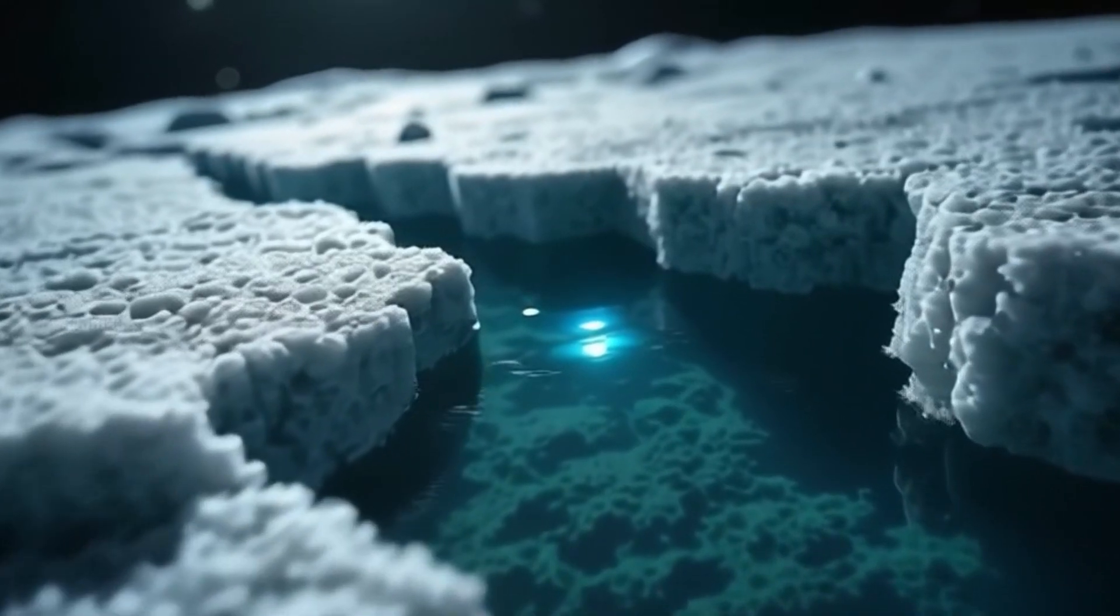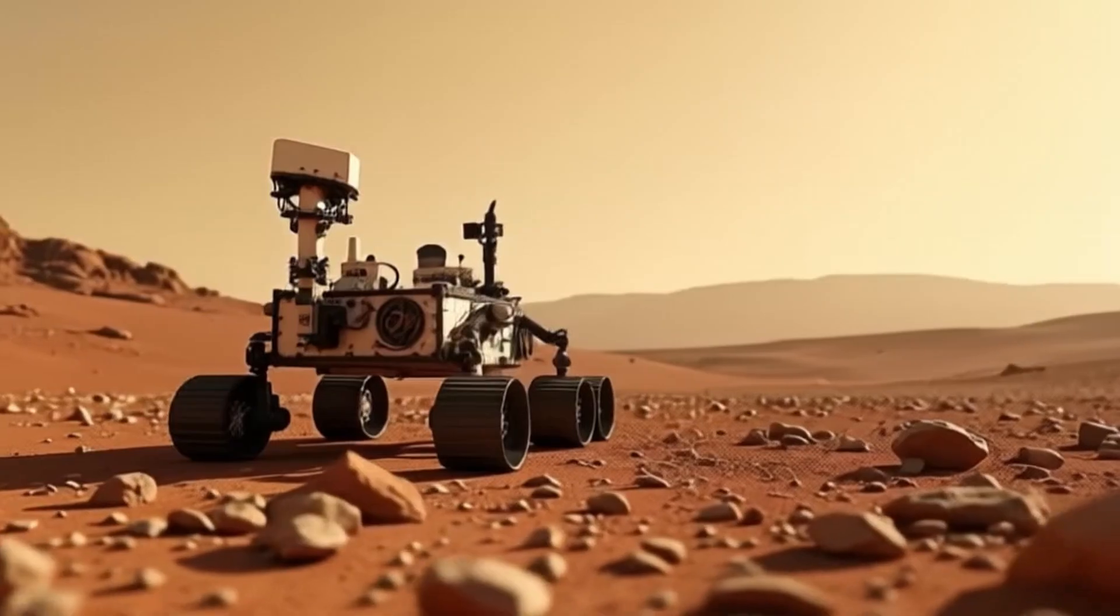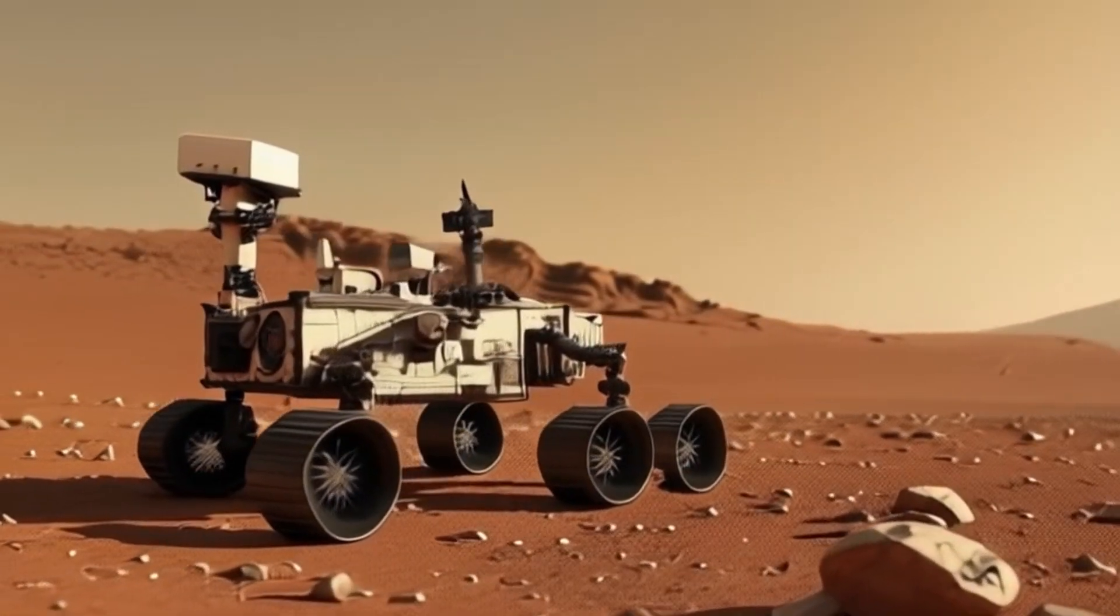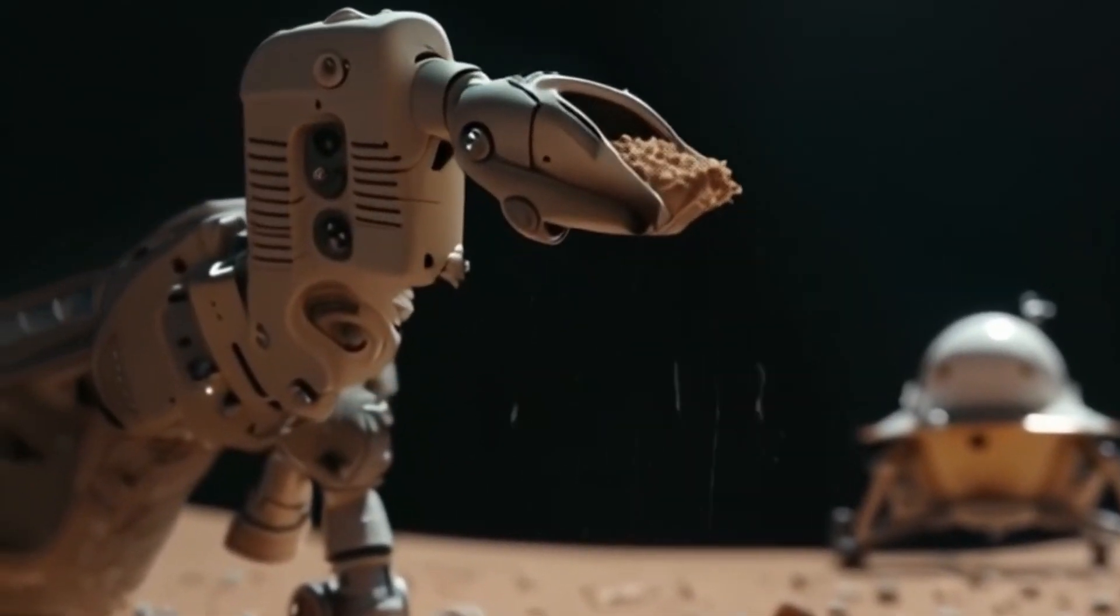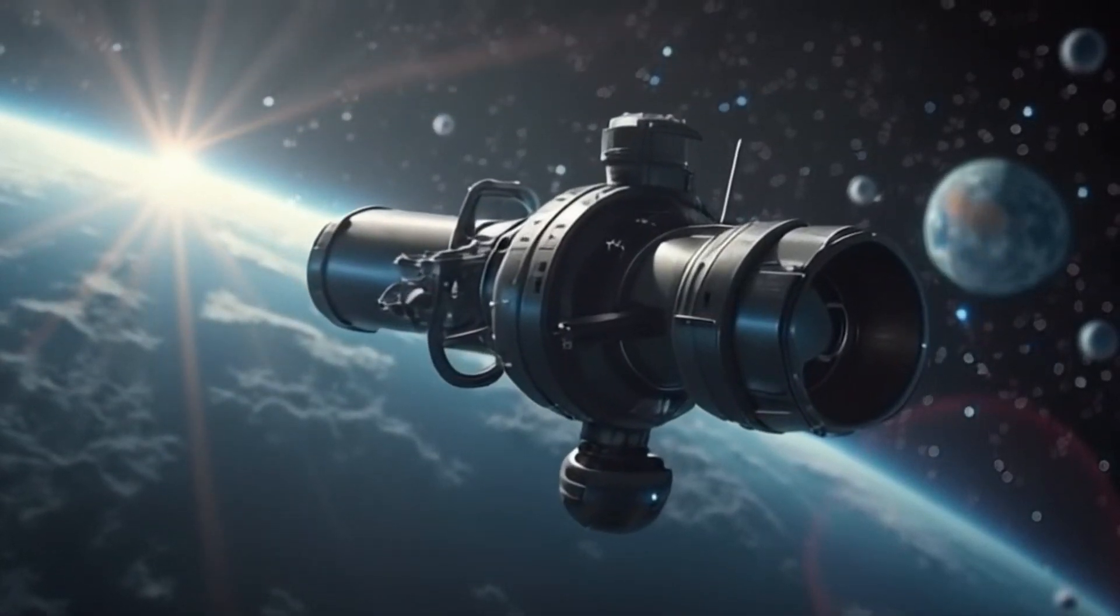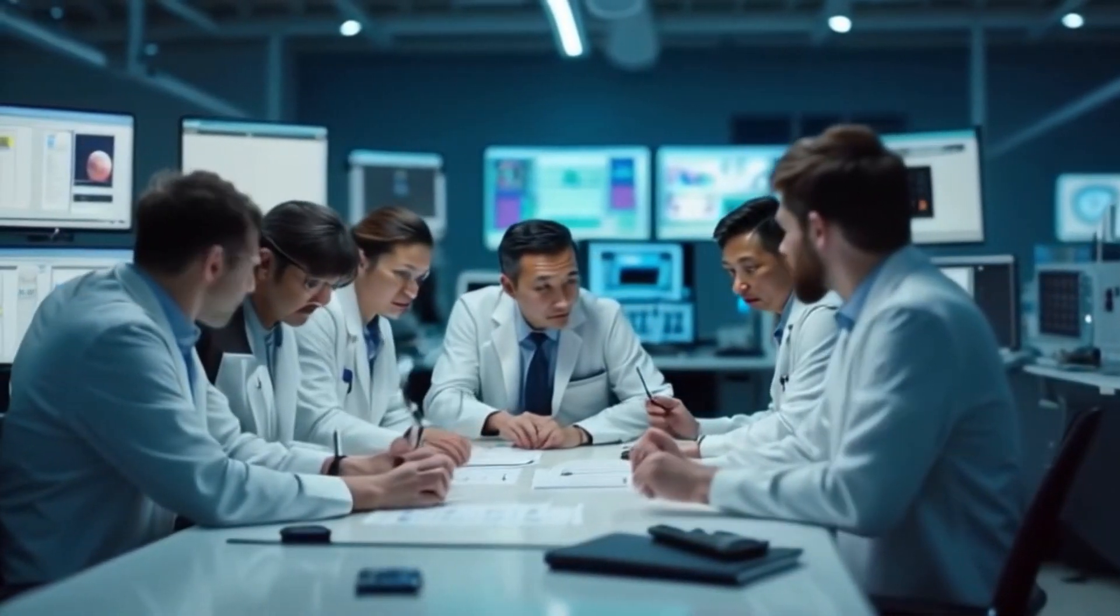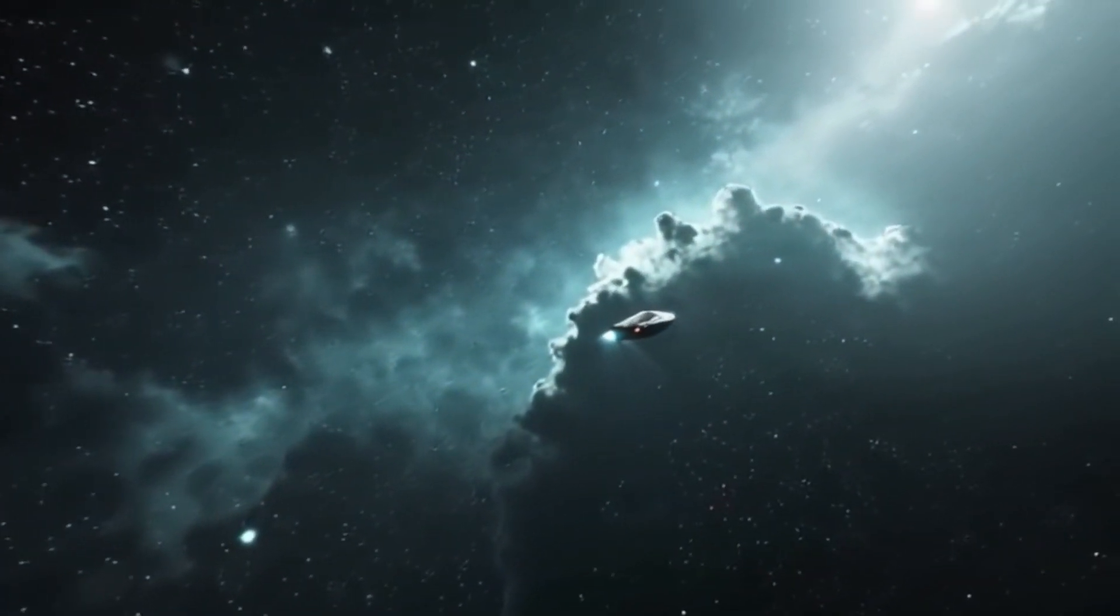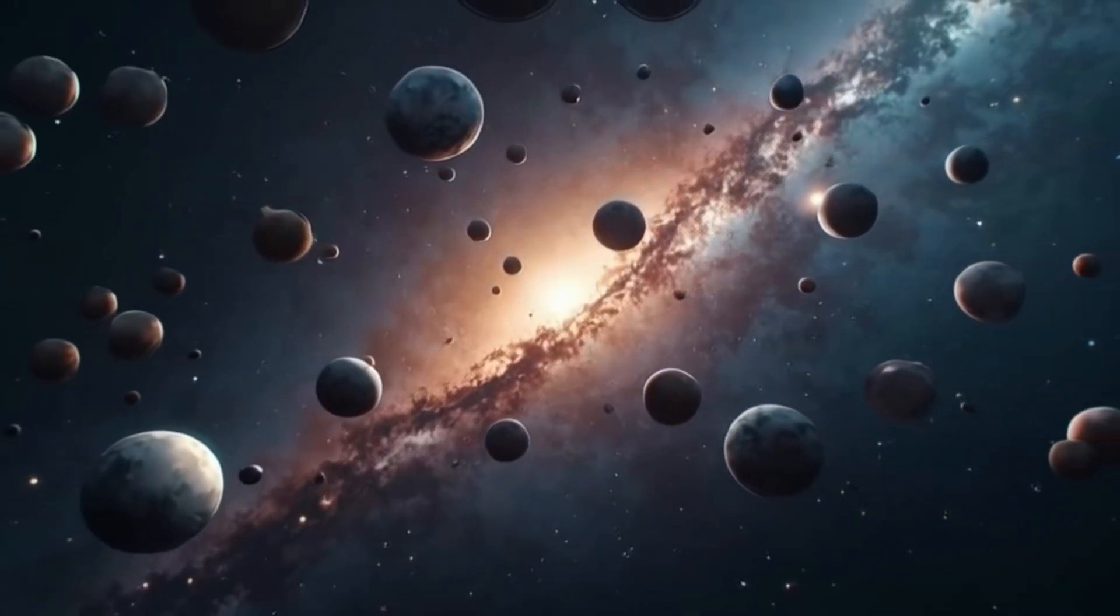Moons like Europa and Enceladus may harbor oceans beneath their icy surfaces, ideal for alien life. Missions to Mars search for signs of past or present life, exploring its surface and subsurface. Collecting samples from Mars and other planets is key to answering whether life existed beyond Earth. Next-generation telescopes and probes will analyze distant worlds in greater detail than ever. The search for alien life is a global effort, with nations collaborating on missions and research. With advancing technology, humanity may be on the brink of discovering life beyond Earth. Whether microbes or alien ecosystems, the search for life beyond Earth has just begun.